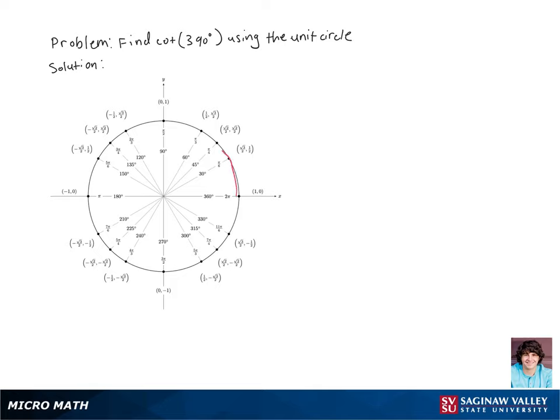Let's find cotangent of 390 degrees using the unit circle. So first we're going to rotate 390 degrees around the unit circle.